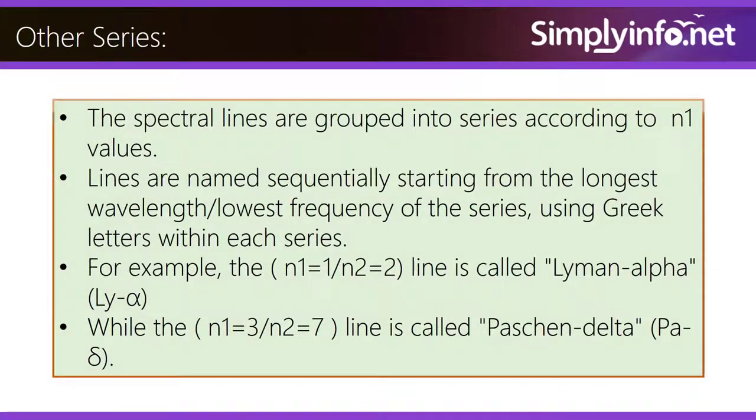Other series: The spectral lines are grouped into series according to N1 values. Lines are named sequentially starting from the longest wavelength, lowest frequency of the series, using Greek letters within each series. For example, the N1 equals 1, N2 equals 2 line is called Lyman-alpha.